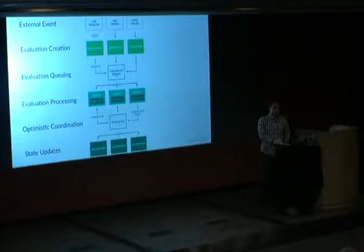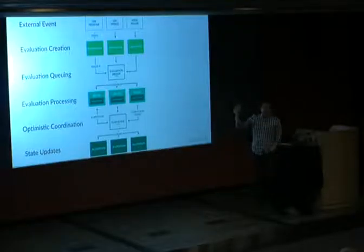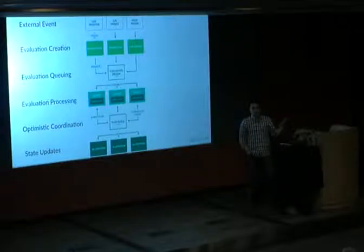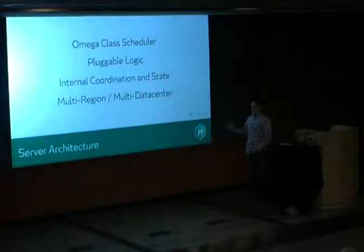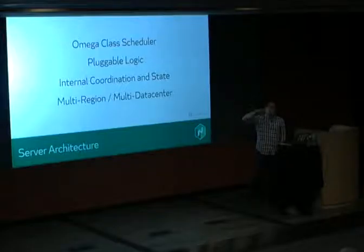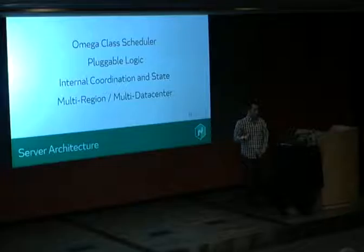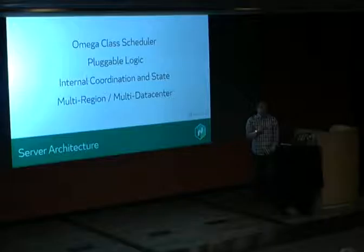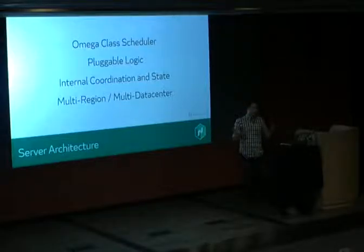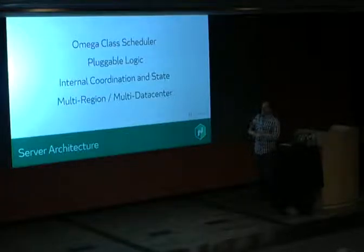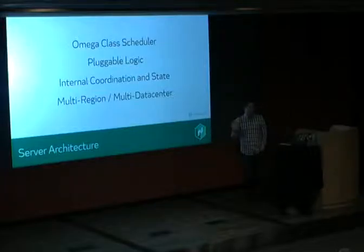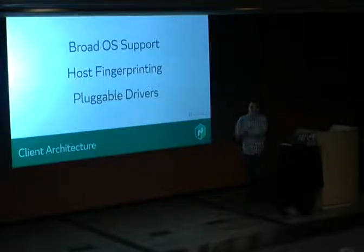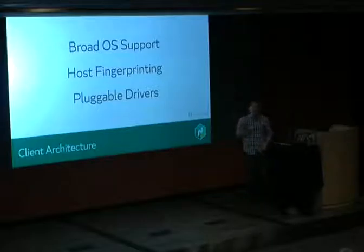In one slide, that's the whole internals of an optimistically concurrent scheduler. The server architecture is an Omega-class scheduler — modeled closely after Google's Omega — the only Omega-class scheduler in public existence. The scheduler logic is pluggable. In the last version we introduced 'periodic' — essentially cron as a distributed service. Multi-region and multi-data center are built in. You don't need ZooKeeper or anything else — just Nomad, which embeds everything.